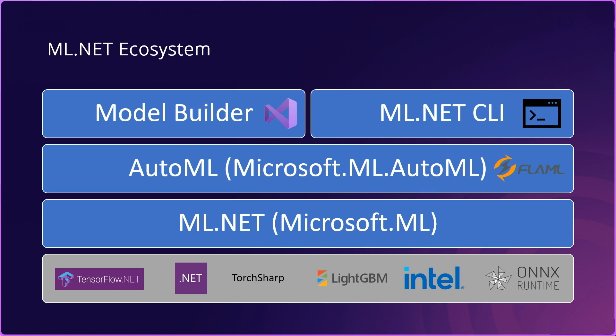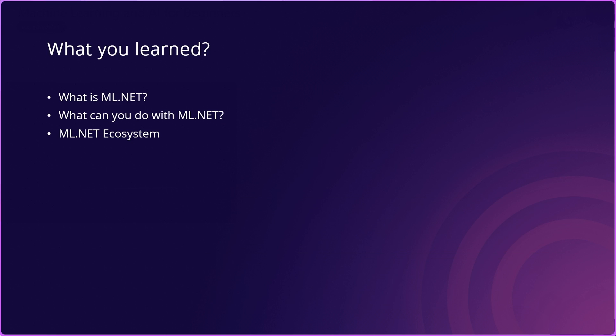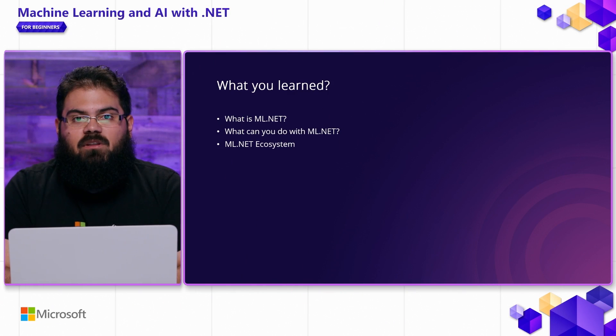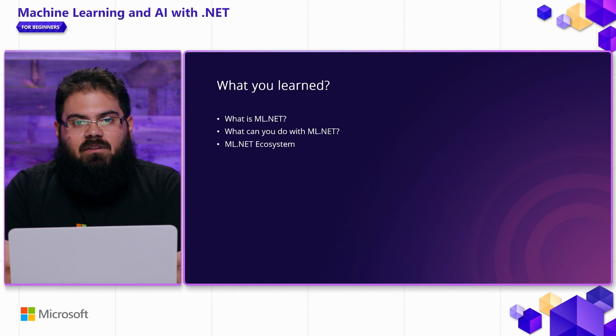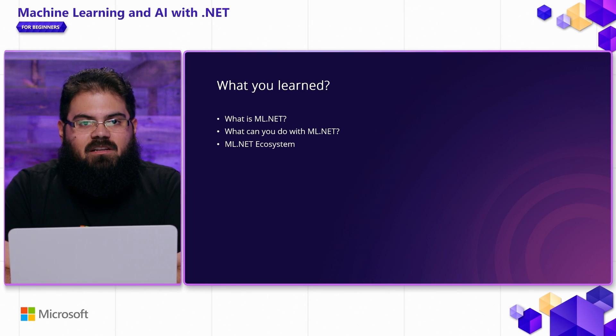Last but not least, AutoML is the engine powering tools such as Model Builder — a Visual Studio extension — and the ML.NET CLI, which is a .NET tool available on the command line for Windows, Mac, and Linux. That should give you a general overview of what ML.NET is, what you can do with it, and what the ML.NET ecosystem looks like. In later videos, we're going to go into detail on how you can start using ML.NET to train custom machine learning models. Thanks for watching — see you in the next video.